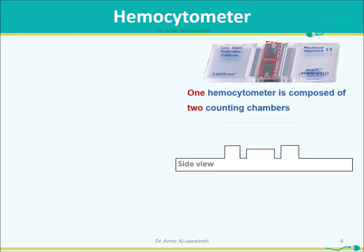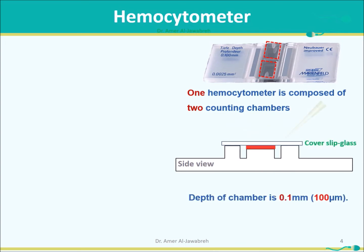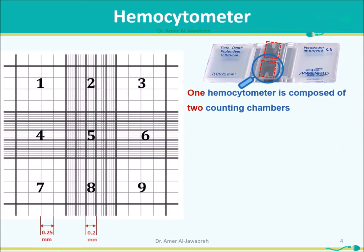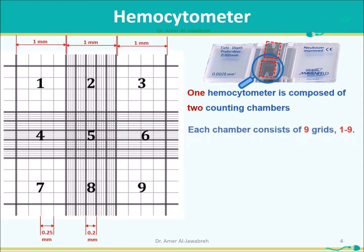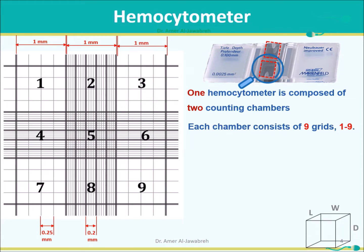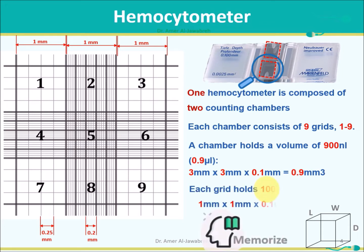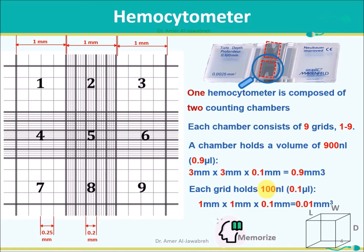A hemocytometer consists of two counting chambers, one and two, with a depth of 0.1 mm. Each chamber consists of nine grids, one to nine. A chamber holds a volume of 900 nL (3 x 3 x 0.1 mm). Each grid holds 100 nL (1 x 1 x 0.1 mm). Memorize: 100 nL per grid.